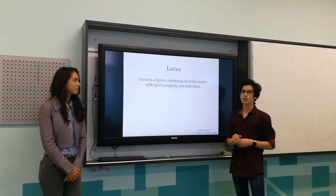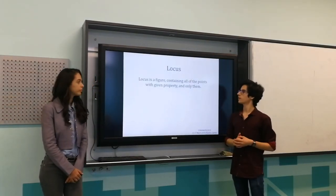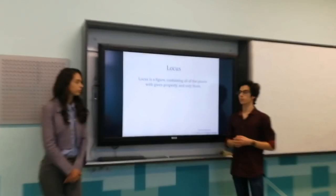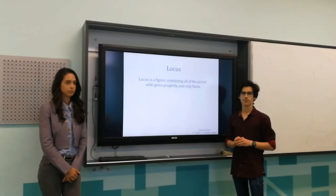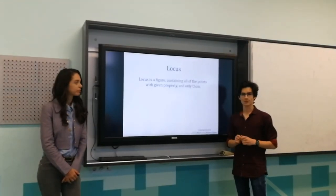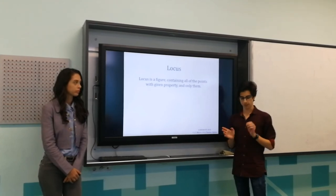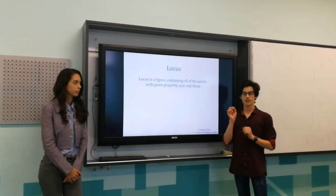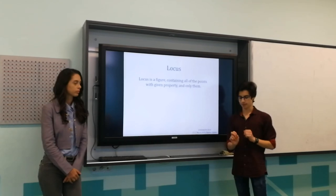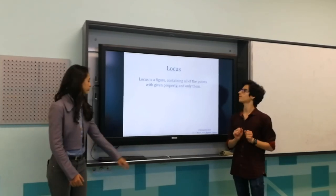What about the locus? A locus is a figure containing all the points with a given property, and only them. For example, the locus of points which are at a given distance from a given point is a circle centered at the given point with radius equal to the given distance.